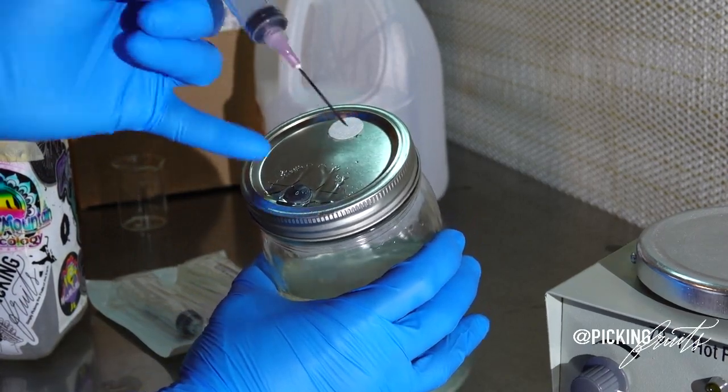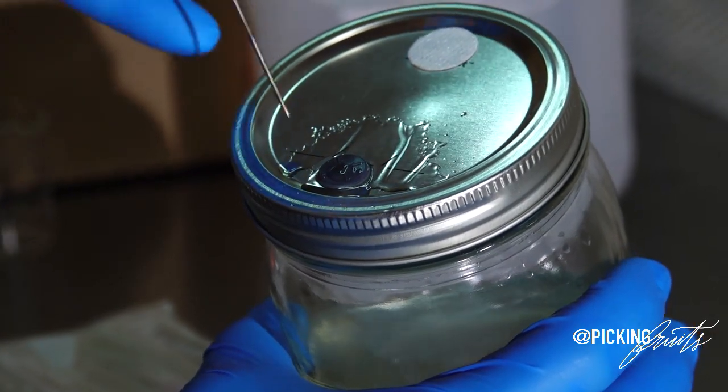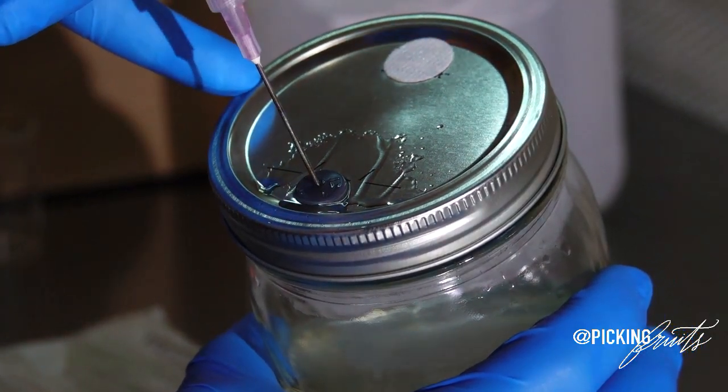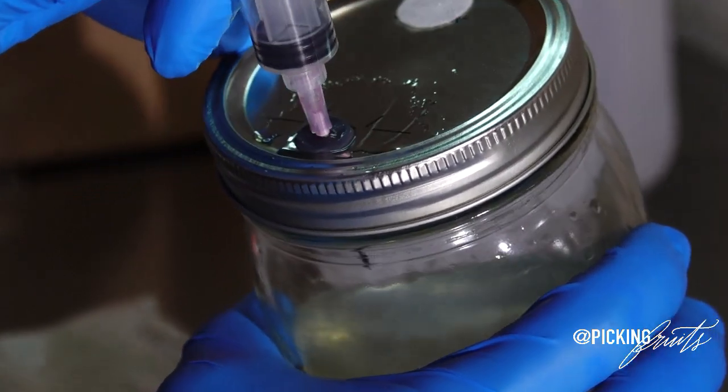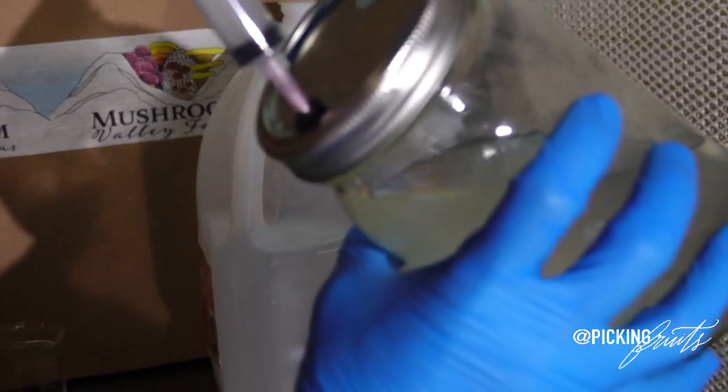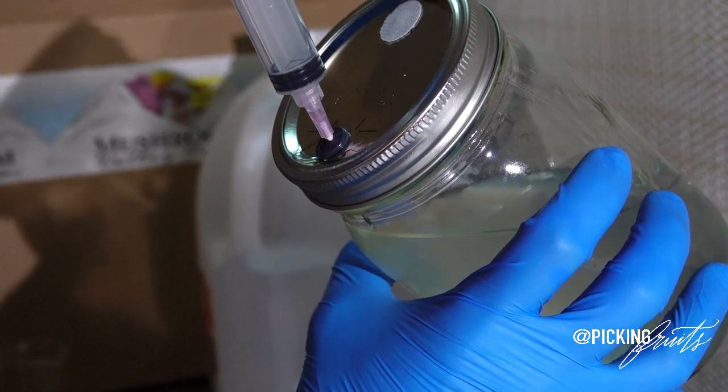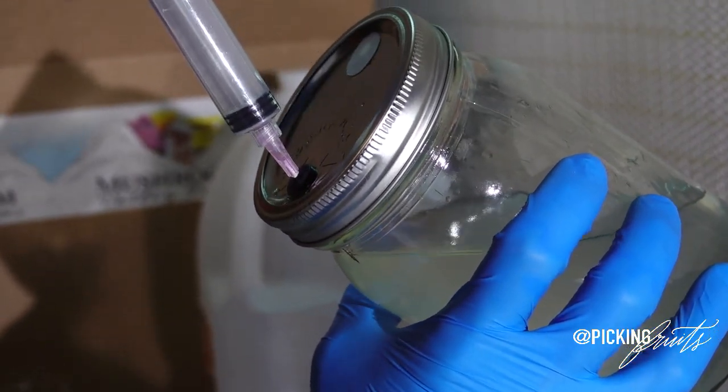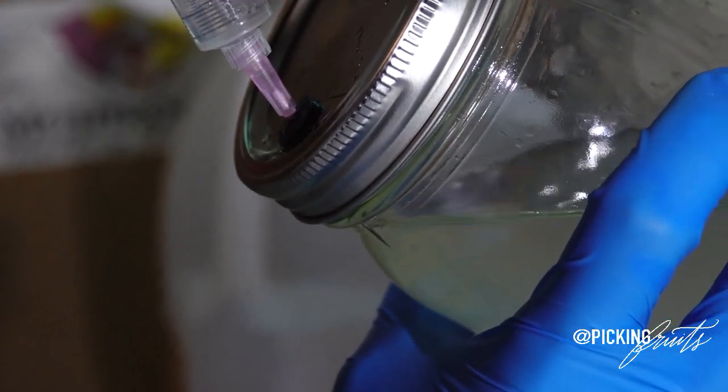Same thing. You are going to take some isopropyl alcohol. You are going to spray your SHIP down. Make sure that your hands don't come into contact with it after it has been sanitized. And then we are going to stick it in the same place. And we are going to tilt our jar back, making sure that we never actually get our filter wet or we never have any liquid coming up to the SHIP. And we are going to draw our liquid and our mycelium into the syringe.